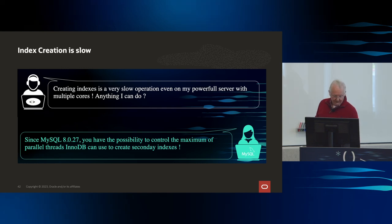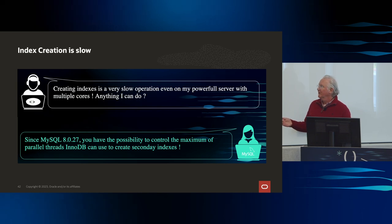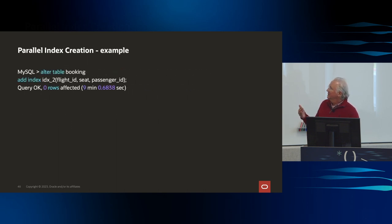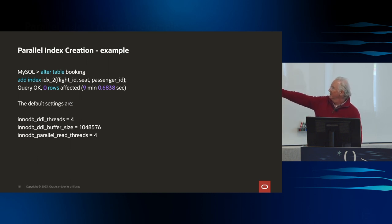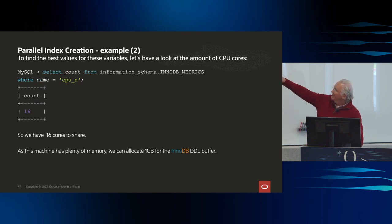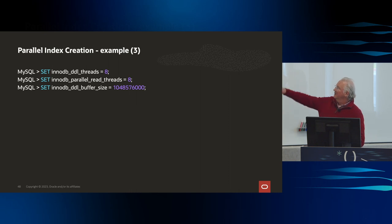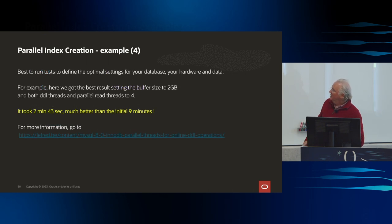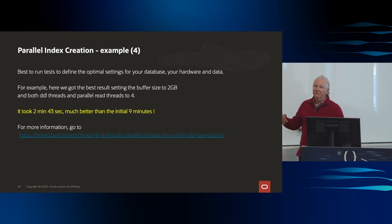Number five: it takes a lot of power to create indexes, but we can add buffer and threads to this. A particular ALTER TABLE took nine minutes with four threads and a certain buffer size. But if I look at how many CPU cores I have — 16 — I can use more of that. I'll set my DDL threads to eight, my rethreads to eight for the 16 cores, and up my buffer size. Now I do it in under three minutes versus nine minutes — tripling my performance.